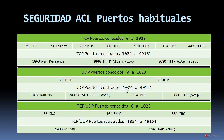Puertos registrados UDP, del 1024 al 49.151: 1812 RADIUS, 2000 Cisco SCCP para VoIP, 5004 RTP y el conocido 5060 SIP para VoIP. Puertos conocidos TCP/UDP del 0 al 1023: 53 DNS, 161 SNMP y 531 IRC. Y en puertos registrados TCP/UDP, del 1024 al 49.151: 1433 para Microsoft SQL y 2948 WAP para MMS.